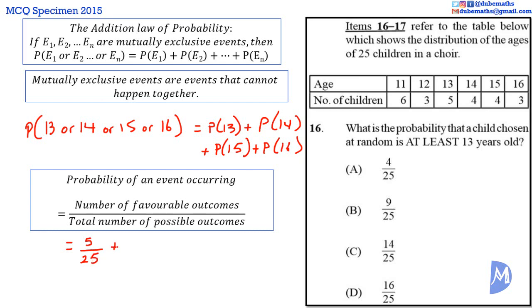Similarly, the probability that a child is 14 is 4 over 25. And the probability that a child is 15 is also 4 over 25. The probability that a child is 16 is 3 over 25. Adding, 5 added to 4 is 9, 9 plus 4 is 13, 13 plus 3 is equal to 16. We have 16 over 25. The answer is D.